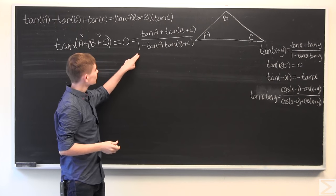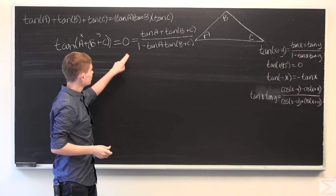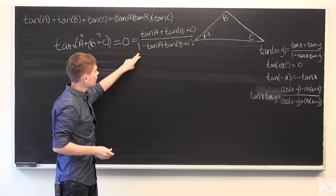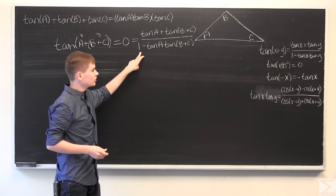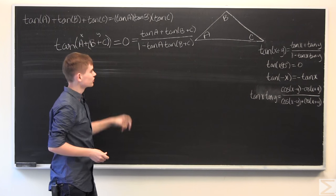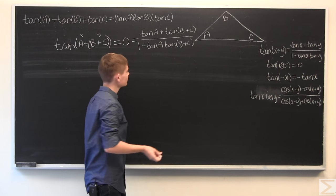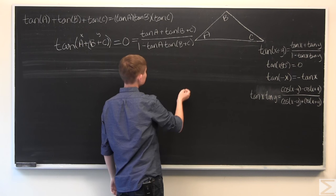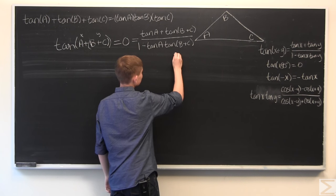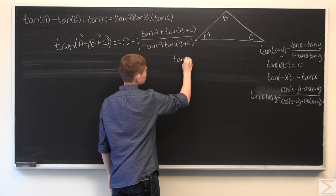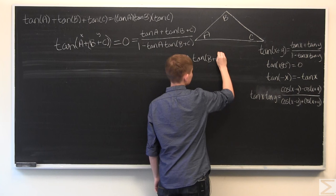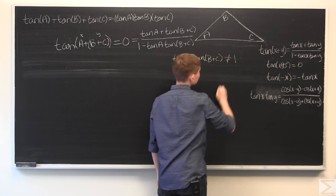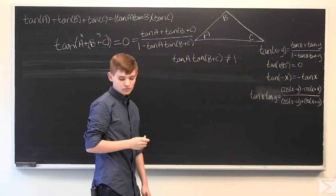Okay. So, this is the identity written out for this. And all we have to do is check that the denominator is not equal to zero, because you cannot divide by zero. So, to check this, we just have to show that tangent of A times tangent of B plus C is not equal to one.